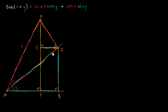If you just look at this, what is sine of x plus y going to be? Well, x plus y is this entire angle right over here. Looking at right triangle ADF, the sine of an angle is opposite over hypotenuse. The hypotenuse here is 1, so sine of x plus y is equal to the length of segment DF.